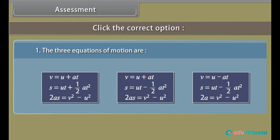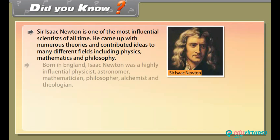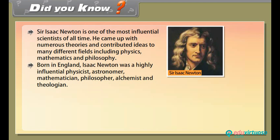Now time for an assessment — click the correct option. Did you know? Sir Isaac Newton is one of the most influential scientists of all time. He came up with numerous theories and contributed ideas to many different fields including physics, mathematics, and philosophy. Born in England, Isaac Newton was a highly influential physicist, astronomer, mathematician, philosopher, alchemist, and theologian. John S. Kepler helped lead a scientific revolution in the 17th century with his amazing work in astronomy, including his three laws of planetary motion.